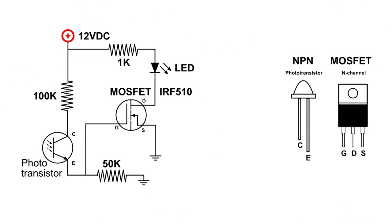The new circuit works exactly opposite of the original one. In other words, when light hits the phototransistor the LED lights, and when it's in darkness it goes out — which is 180 degrees out.